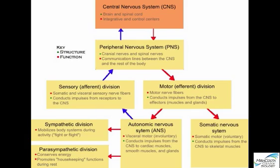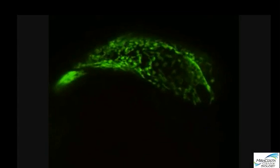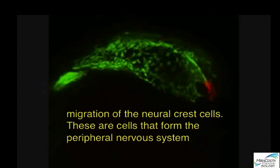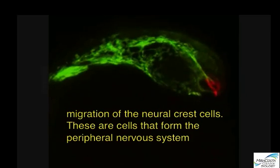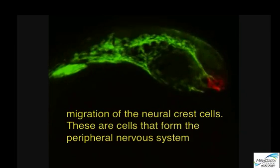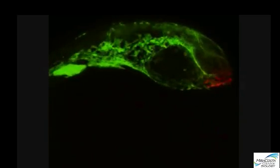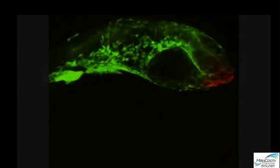The central nervous system forms embryonically with this one event of hollowed tube formation, while the peripheral nervous system forms a good bit later and from a different population of embryonic cells that migrate throughout the body and form the peripheral nerves that communicate between all parts of the body and the central nervous system.